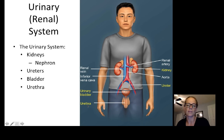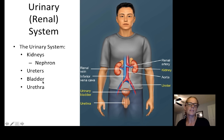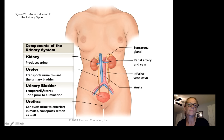We'll talk about the differences between the male and female urethra when we get to the reproductive lecture, which is our next lecture. So the urinary system is made up of the kidneys. The working unit of the kidney is the nephron. After the nephrons in the kidneys produce urine, urine will exit the kidneys through the ureters, then to the bladder, and then out of the body through the urethra.